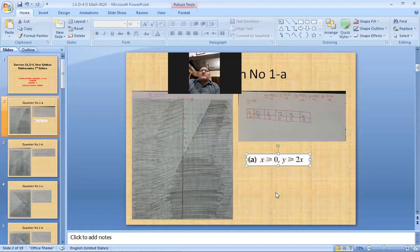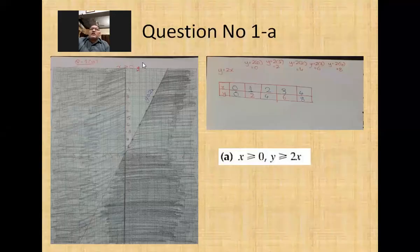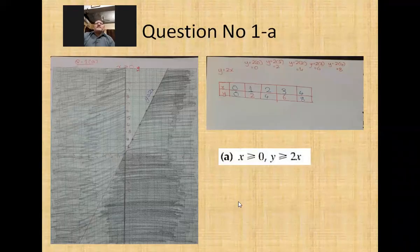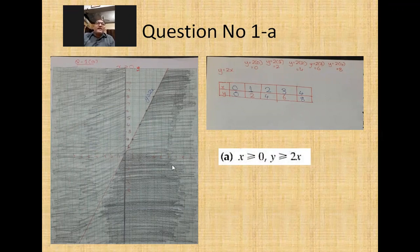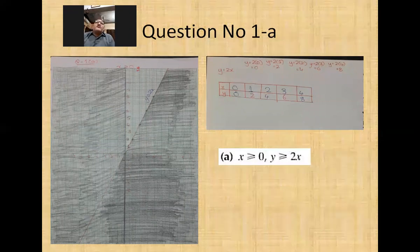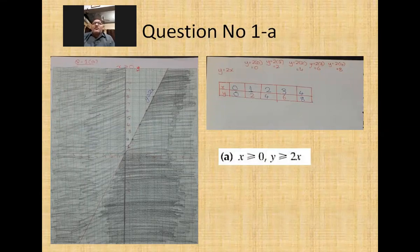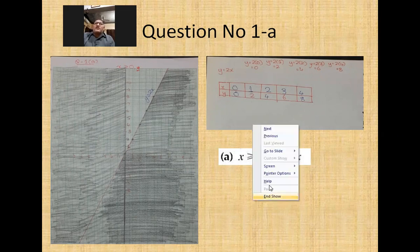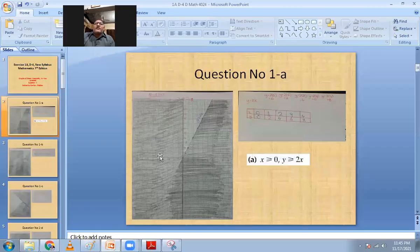So we have this question. I have already drawn this graph but I will show you how these graphs are drawn. I will prepare a graph paper — here you can see I have prepared one. I will take this into Paint and show you the whole process. These are the two inequalities: x is greater than or equal to zero, and the second inequality is y is greater than or equal to 2x.